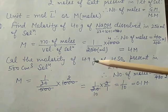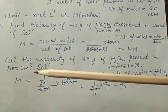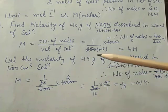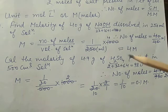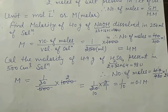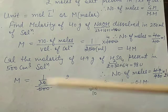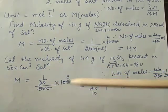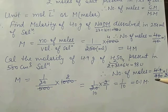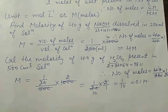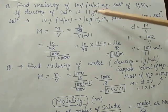Next question: calculate the molarity of 4.9 gram of H2SO4 present in 500 cm³ of solution. Number of moles = 4.9 divided by molar mass of H2SO4 (98) = 1/20. Volume is 500 cm³ converted to liters = 0.5 L. Molarity = (1/20) divided by 0.5 = 0.1 molar.